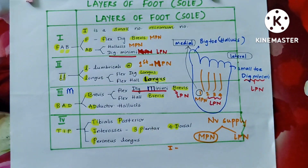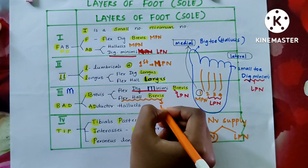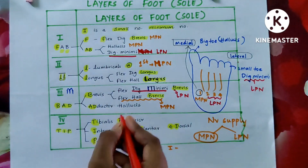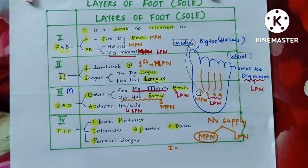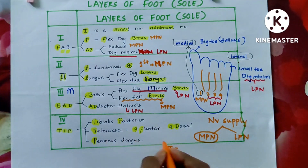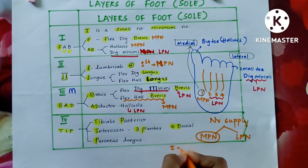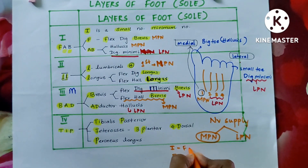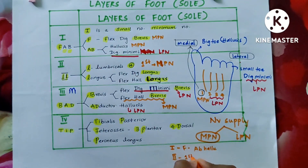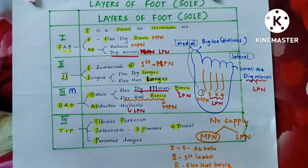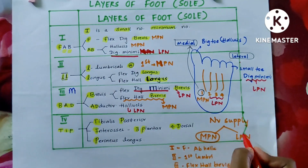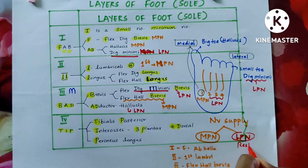Now let us discuss the third layer. In the third layer, digiti minimi is present, so that is LPN. Hallucis is towards the medial side, so it would normally be MPN — but adductor hallucis is an exception. Even though the word hallucis is present, adductor hallucis is supplied by LPN, not MPN. Remember that point: adductor hallucis is an exception supplied by LPN. So from the third layer, flexor hallucis brevis is MPN, but adductor hallucis should not be included in MPN.